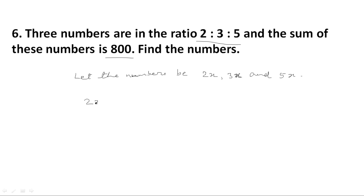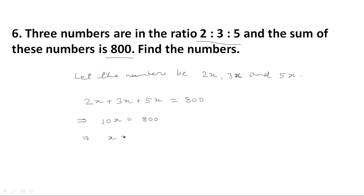It means 2x plus 3x plus 5x is equal to 800. This implies 10x is equal to 800. This implies x is equal to 800 divided by 10, which is equal to 80.